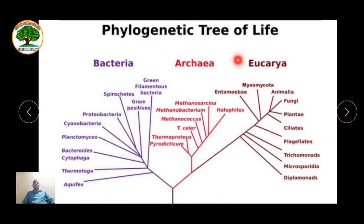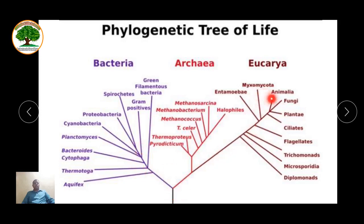This is the phylogenetic tree of life where three different domains are shown: Bacteria, Archaea, and Eukarya. You can see how they are commonly related and how they have diverged over time. Here you can see three domains of life represented in the form of a phylogenetic tree.